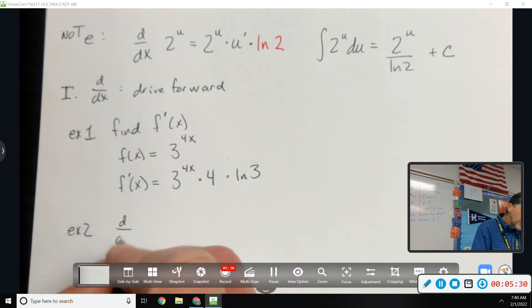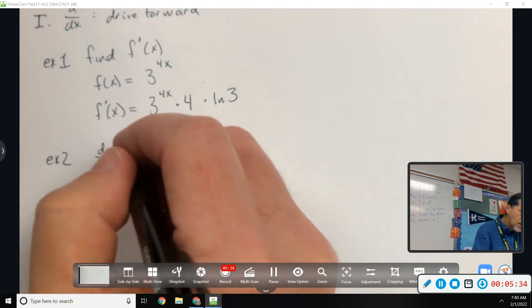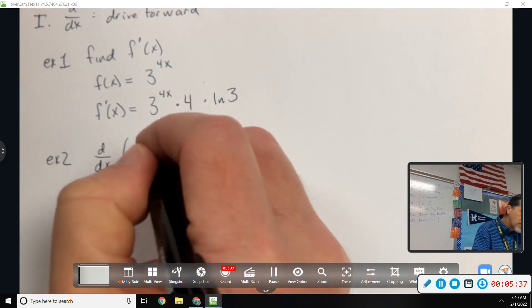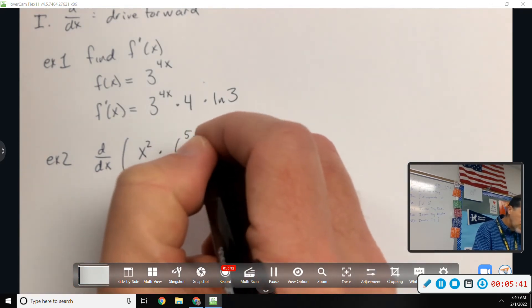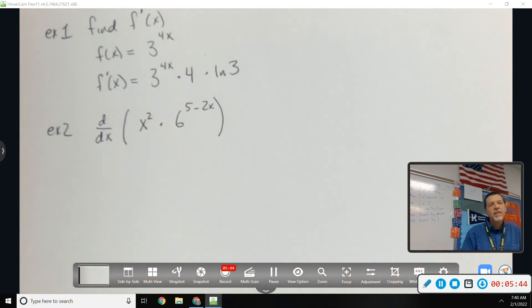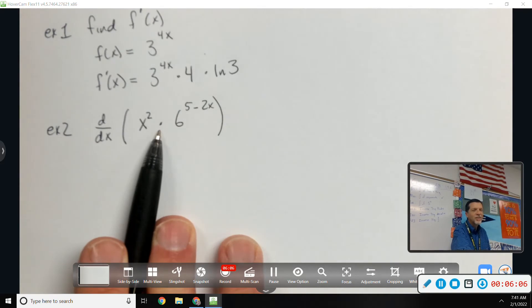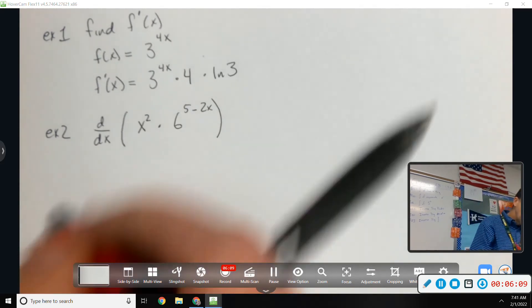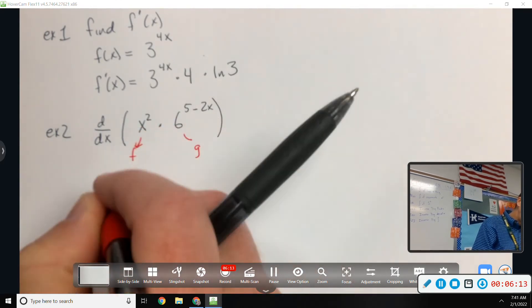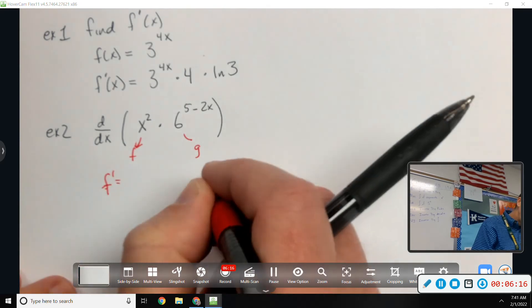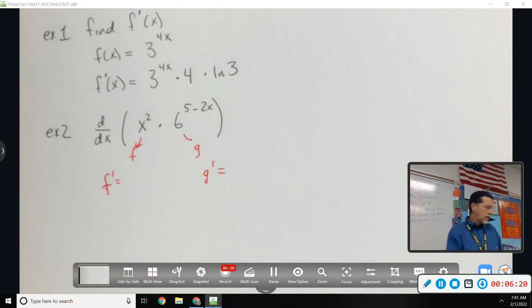Let's do one more of those. I'm going to write it a little bit differently. Instead of saying F and F prime, I'm just going to say D DX. So take the derivative of X squared times 6 to the 5 minus 2X. What's going on here? Using a rule we haven't seen in a while, maybe. Product rule. You guys are asleep this morning. So we'll call the first one F, the second one G. So I'll need F prime and G prime, and then I'll have to figure out how to put them back together.